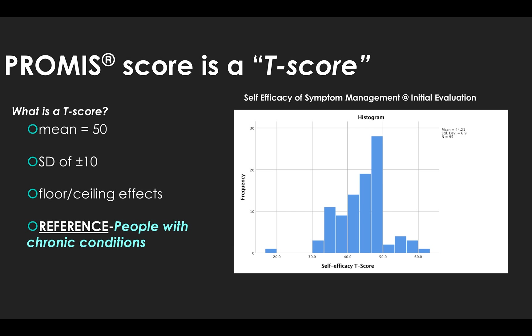Now the mean is the average confidence people have compared to other people with chronic conditions. In this sample at initial evaluation from orthopedic patients, we can see that most patients are shifted to the left — below 50. A high score means more confidence, and a low score means low confidence. These individuals have much lower confidence at their initial evaluation, with an average of about 44.2, or about half a standard deviation below the mean.